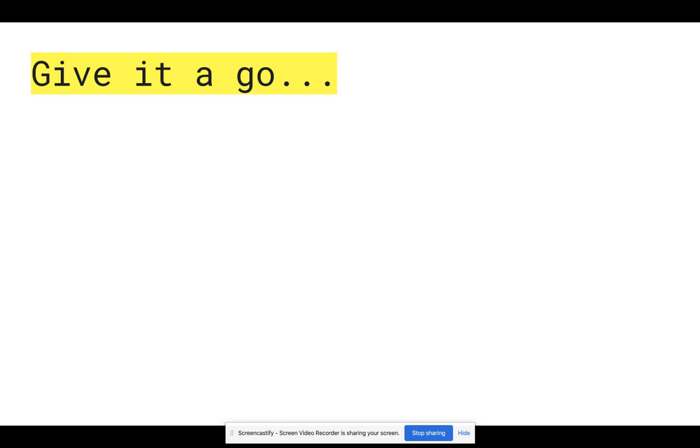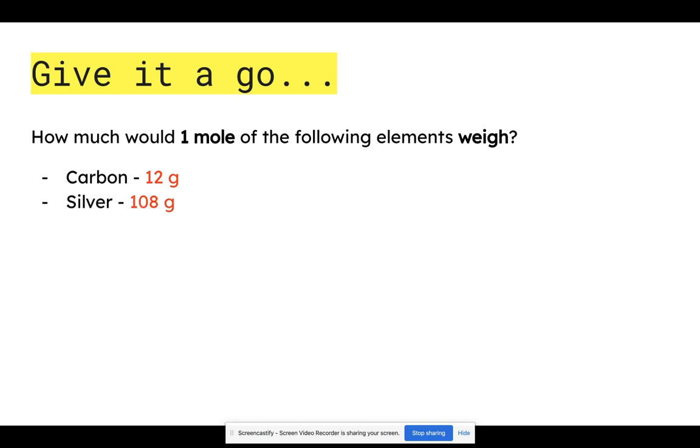Okay, so answers. To find one mole of the following elements, you would look on your periodic tables. Carbon's atomic mass and molar mass is 12 grams. Silver's molar mass is 108 grams. Hydrogen would weigh one gram and a mole of xenon would weigh 131 grams. Remember each one of those samples contains exactly the same number of atoms, but because their masses are different, they weigh different amounts.